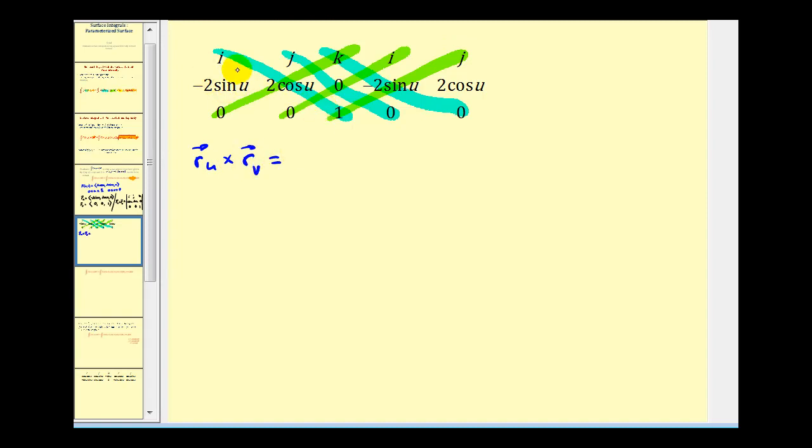So we're going to have two cosine u i, plus zero, plus zero, minus zero, minus zero, and minus negative two sine u j. So that'll be plus two sine u j.